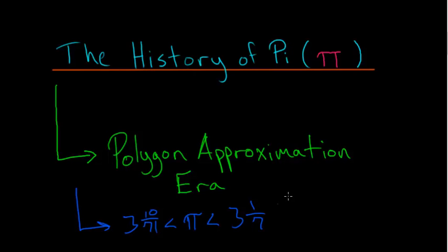In the last video I went through how Archimedes was able to find this result using large inscribed and circumscribed polygons to find the upper and lower bounds of pi. This result by Archimedes was found in 250 BCE.